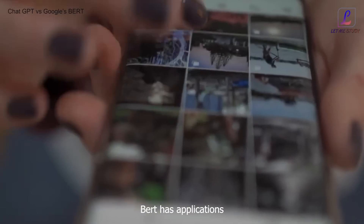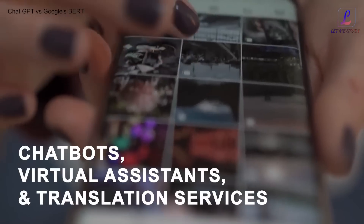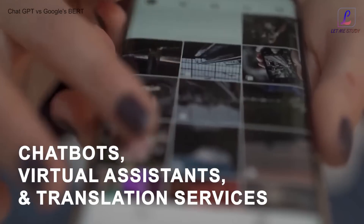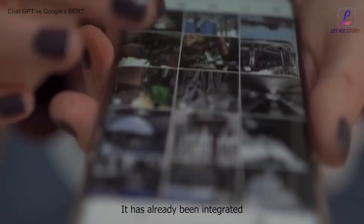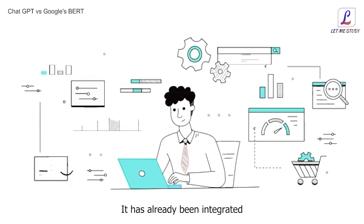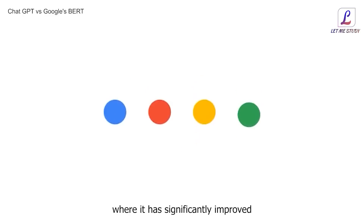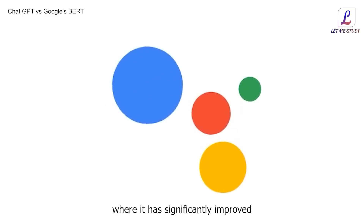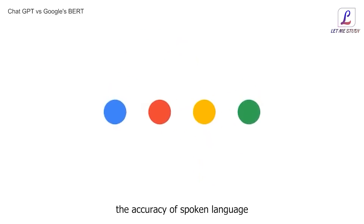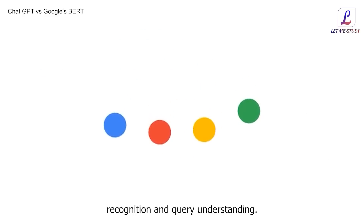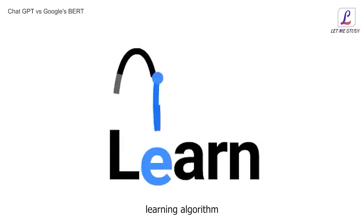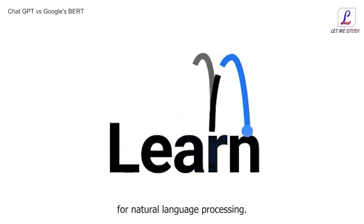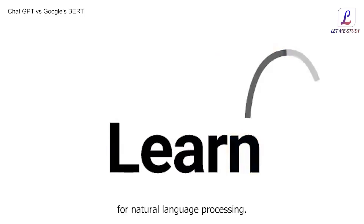In addition to search engines, BERT has applications in several other areas, including chatbots, virtual assistants, and translation services. It has already been integrated into Google Assistant, where it has significantly improved the accuracy of spoken language recognition and query understanding. In summary, Google's BERT is a deep learning algorithm specifically designed for natural language processing.